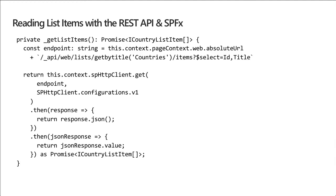There's also a third optional parameter for the request object if we need to change headers or add a body — most useful for write operations. When we issue the request, we get a response object back giving us access to HTTP response headers and status code. Since the raw data comes back as a byte array, we call the JSON method to convert it to a JSON object. Because we went to the items collection, we get back a collection in the value property — an array of items matching our ICountryListItem interface with ID and title properties.